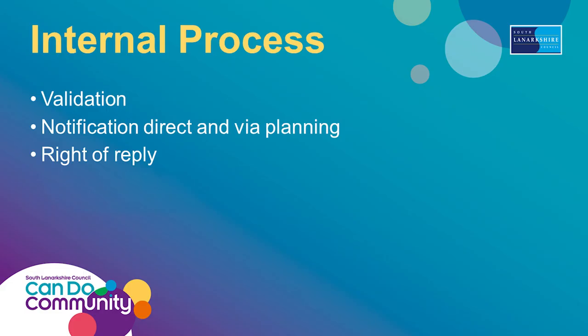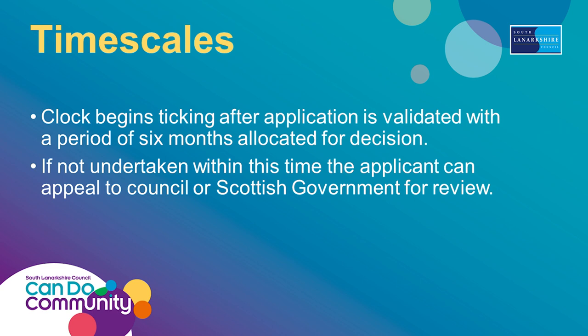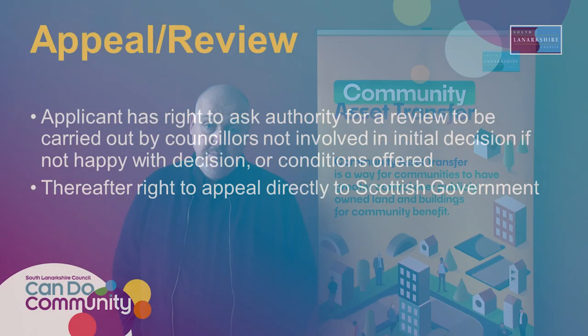Part of this process entails us consulting local neighbours and the local community on the planning implications of what you're wanting to do. They then have the right to provide their reply on this. We look at the best value — the community benefit of your application — and give it a score. This is then forwarded to a Community Asset Transfer panel who look at and approve or decline your application, and finally this is submitted to a committee who will endorse the decision made previously. If we do not meet the six-month period, we will ask you for an extension and give our reasons. If you do not wish to grant an extension, you have the right to ask for a review as to why the process is taking so long.